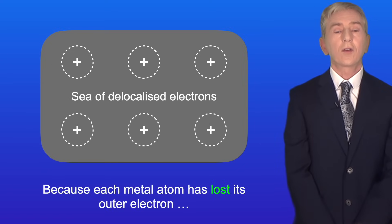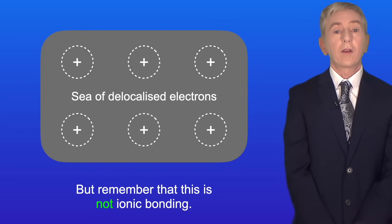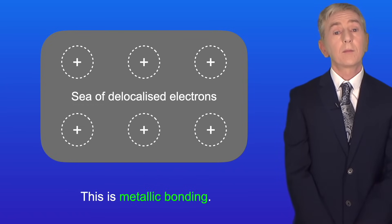Because each metal atom has lost its outer electron we now refer to them as positive metal ions. But remember that this is not ionic bonding. This is metallic bonding.